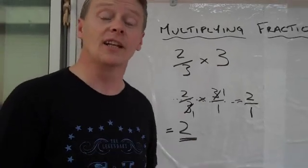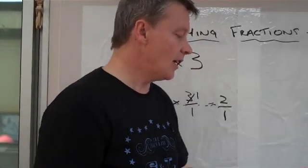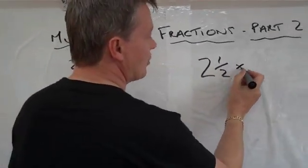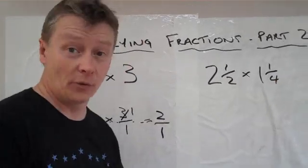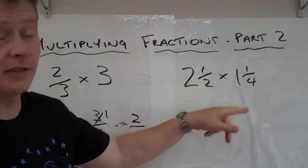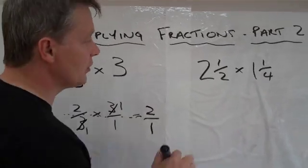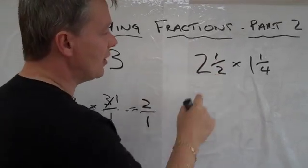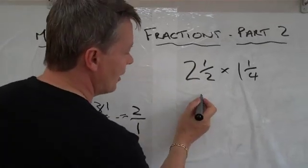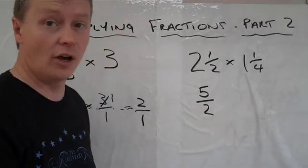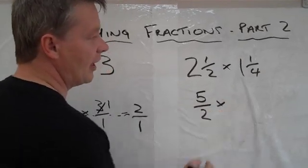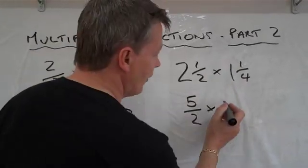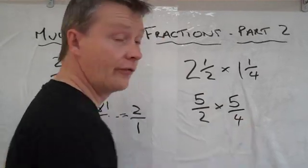Now I'm going to make it a little bit more complicated. The question is 2 and a half times 1 and a quarter. The way to do this is to convert these into fractions. We say 2 times 2 plus 1 — so 2 times 2 is 4, plus 1 at the top is 5 — so it becomes 5 over 2. Doing the same with the next one: 1 times 4 is 4, plus 1 is 5, so that becomes 5 over 4.